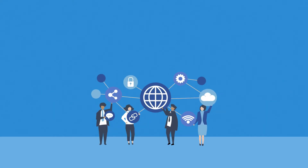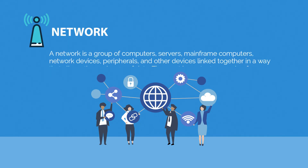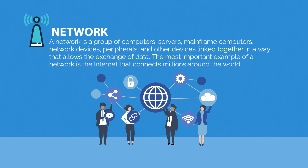Firstly, I will talk about the definition of a network. A network is a group of computers, servers, mainframe computers, network devices, and other devices linked together in a way that allows the exchange of data. The most important example of a network is the internet, which connects millions around the world.